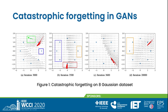We introduce the catastrophic forgetting problem on a synthetic dataset called the 8 Gaussian dataset. The target distribution is a mixture of 8 Gaussians placed on a circle, as shown by the blue dots. The fake data points are shown in red. The arrow at each data point is the gradient of the discriminator with respect to that data point. In the next iteration, the generator will move fake data points along the direction of the arrow.